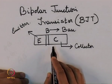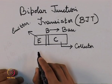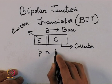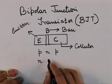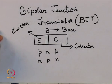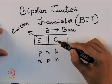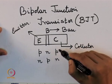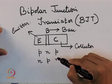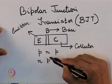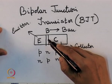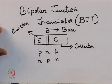Depending on how these three regions are doped, we have two types of BJTs: one is a PNP and the other is an NPN. In a PNP transistor the emitter and collector are doped with P-type impurities, whereas in an NPN transistor the emitter and collector are doped with N-type impurities and the base is doped with a P-type impurity. In the case of a PNP transistor the base is doped with an N-type impurity.